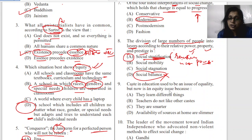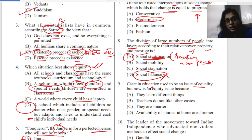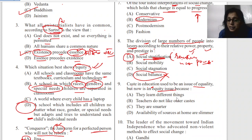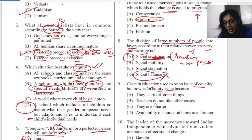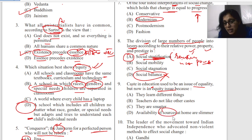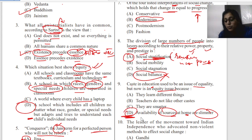Question nine: caste in education may be an issue of equality. The equity issue arises because people from different castes learn different things, teachers may not treat all castes equally, and availability of resources at home is slimmer for some groups. These limited resources are why the equity issue exists — it remains fundamentally the same problem.